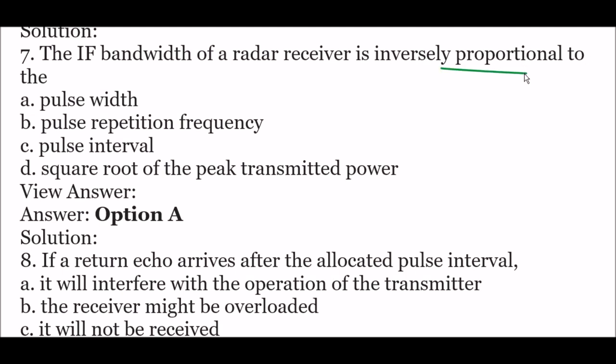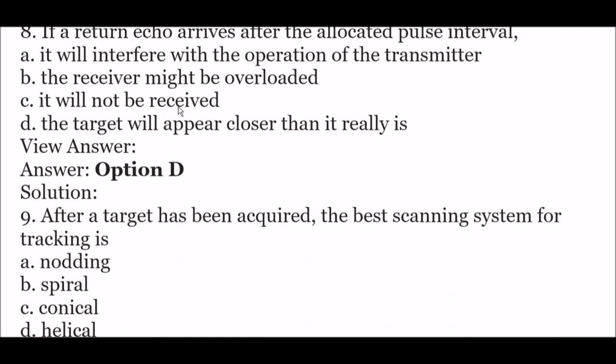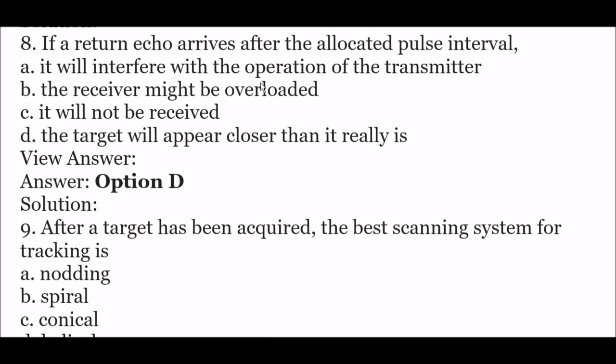Next question: the IF bandwidth of a radar receiver is inversely proportional to — option A: pulse width, option B: pulse repetition frequency, option C: pulse interval, option D: square root of the peak transmitted power. The right answer is option A — pulse width. The IF bandwidth of a radar receiver is inversely proportional to the pulse width.